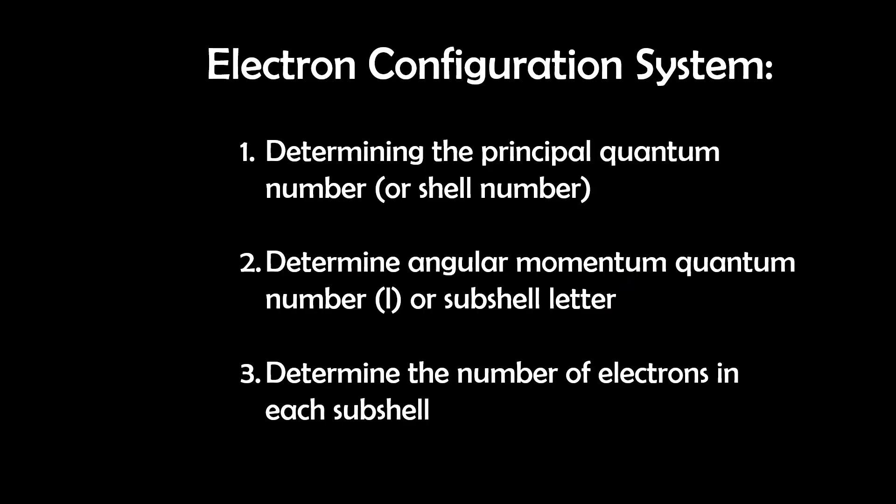So how do we depict this ground state electron configuration? We use the electron configuration system, which involves three steps: determining the principal quantum number or shell number, the angular momentum number L or subshell letter, and the number of electrons in each subshell.